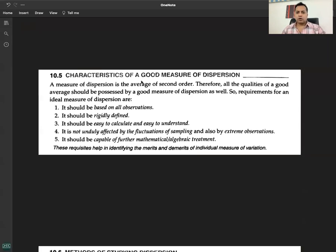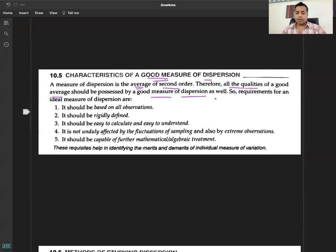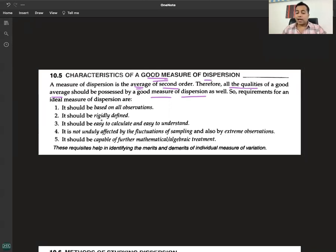Characteristics of a good measure of dispersion: A measure of dispersion is the average of second order. Therefore, all the qualities of a good average should be possessed by a good measure of dispersion as well. The qualities of average, the average of the second order, but the qualities of a good average.